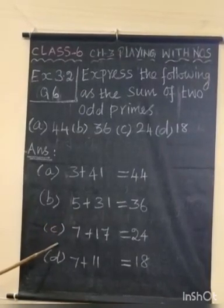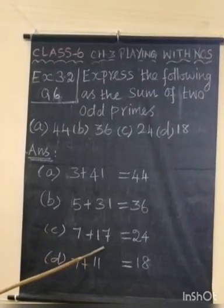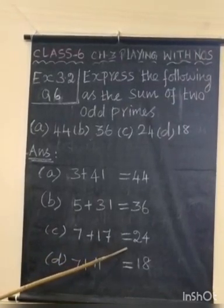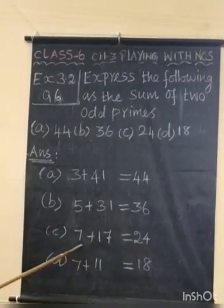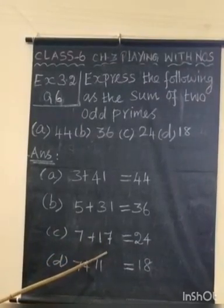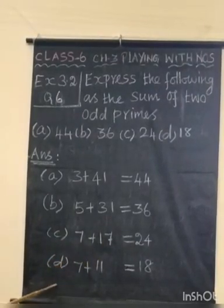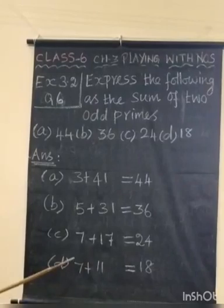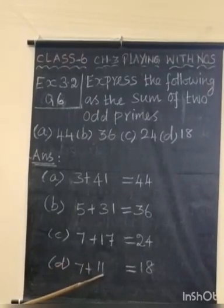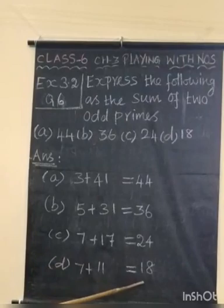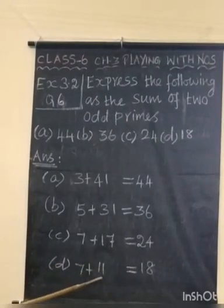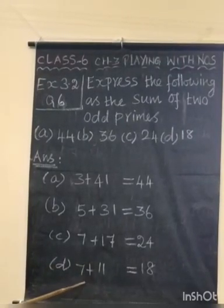Part c, 24. 7 plus 17 which is equal to 24. 7 and 17 are odd prime numbers. Then part d, 7 plus 11. 7 plus 11 equals 18. 7 and 11 are odd prime numbers.